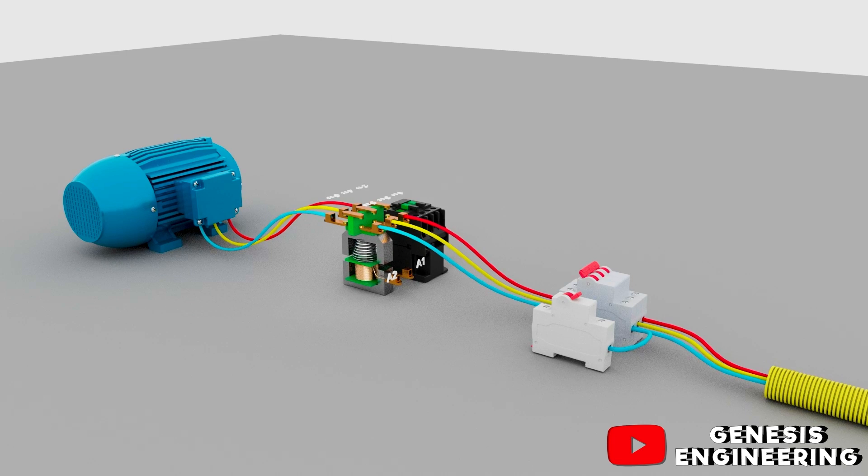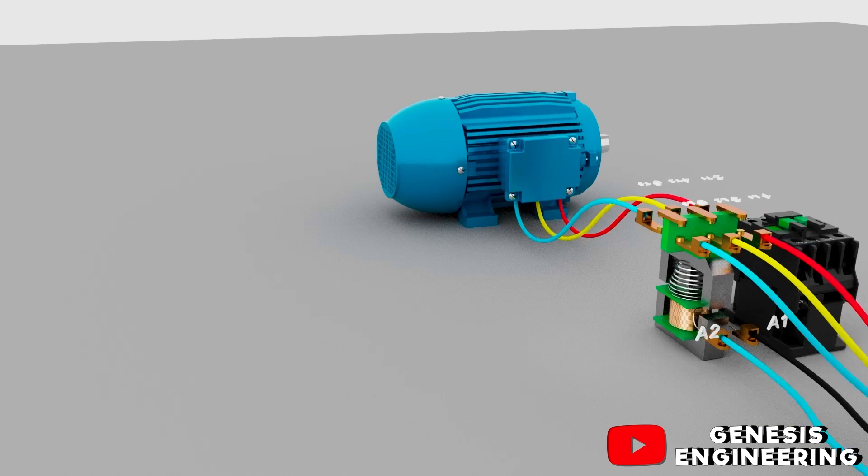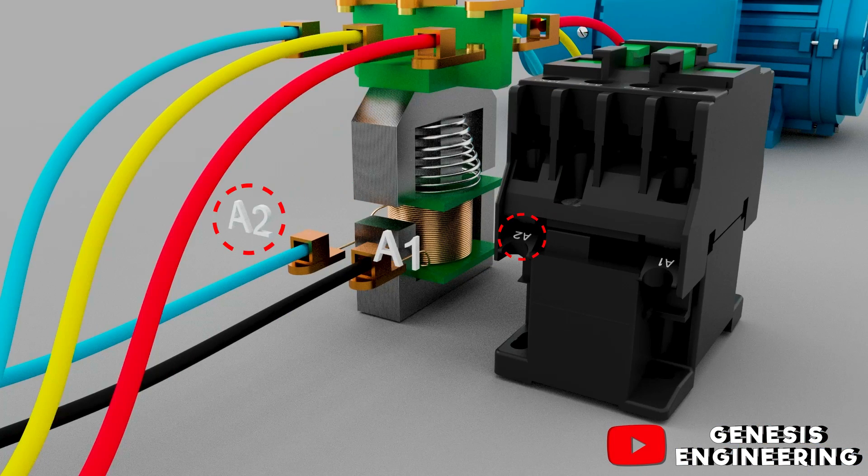Now in the MCB 1 pole miniature circuit breaker it is to power the contactor coil, so we connect one phase to A2 and neutral to A1.